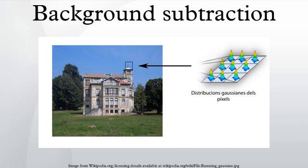Background mixture models: the mixture of Gaussians method approaches background modeling by modeling each pixel as a mixture of Gaussians and uses an online approximation to update the model. It is assumed that every pixel's intensity values in the video can be modeled using a Gaussian mixture model. A simple heuristic determines which intensities are most probably of the background; pixels which do not match these are called foreground pixels. Foreground pixels are grouped using 2D connected component analysis. At any time t, a particular pixel's history is modeled by a mixture of k Gaussian distributions, updated using an online k-means approximation. A standard method of adaptive backgrounding is averaging the images over time, creating a background approximation similar to the current static scene except where motion occurs.